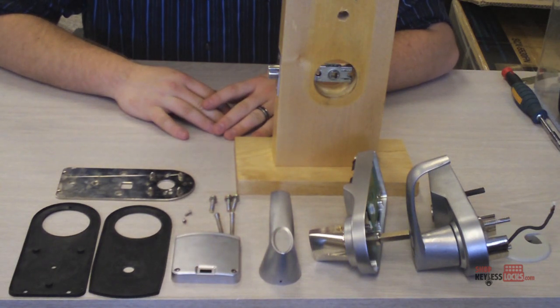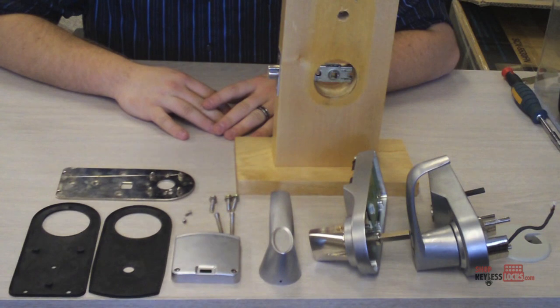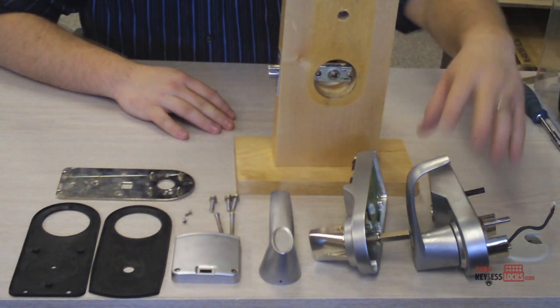Today I'll be showing you how to install the Eternity 4 lock from UCA. In the box with the lock you will get the front of the lock,